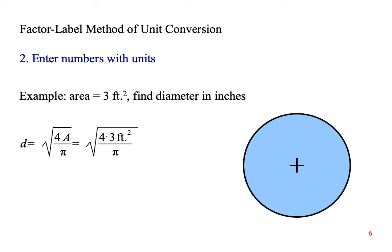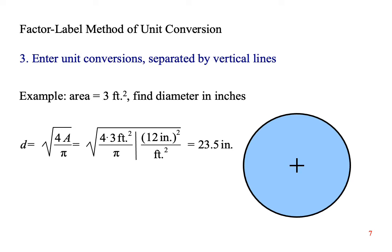Step two is to enter the numbers with units. For example, let's say the area of the circle is three square feet, and we want to know the diameter in inches. Plug in three square feet into the equation. Step three is to enter unit conversions. The trick here is to make sure that whatever you put in the numerator equals whatever you put in the denominator. In this case, twelve inches equals one foot. So if you put twelve inches up top, you can put one foot down below. It doesn't change the meaning of the equation. It's basically multiplying by one. The result doesn't change.